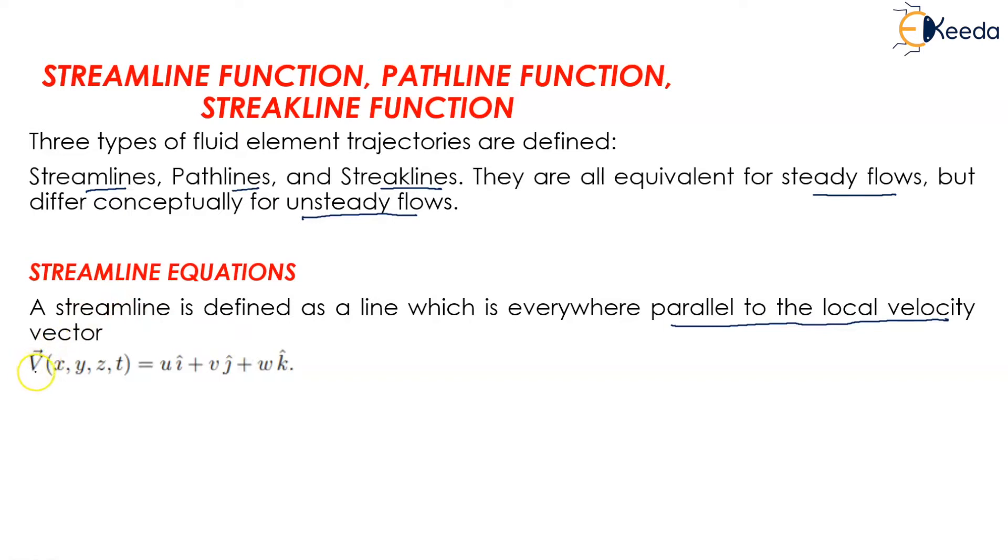The velocity vector V of x, y, z, and t equals u i cap plus v j cap plus w k cap. Now ds bar equals dx i cap plus dy j cap plus dz k cap.